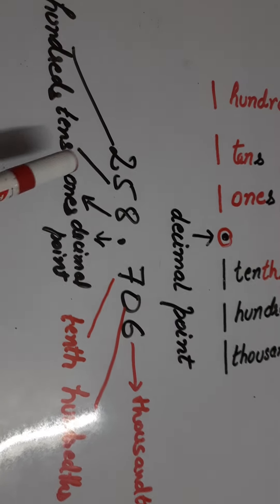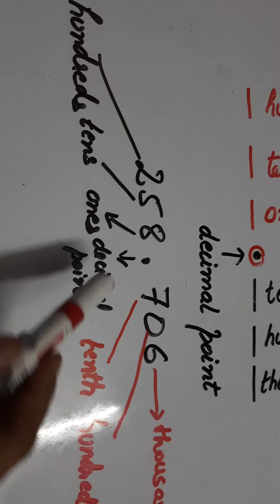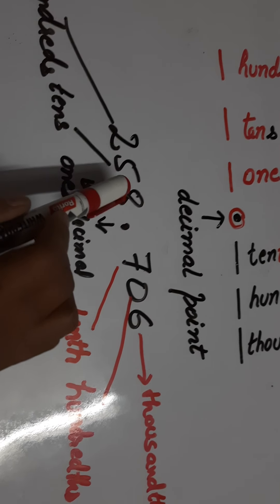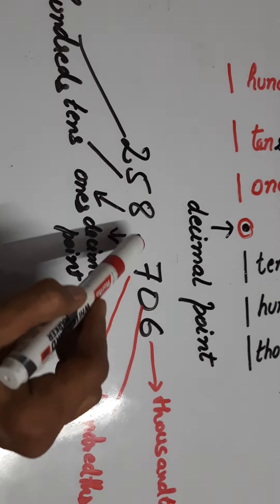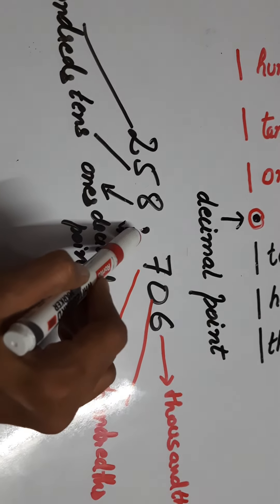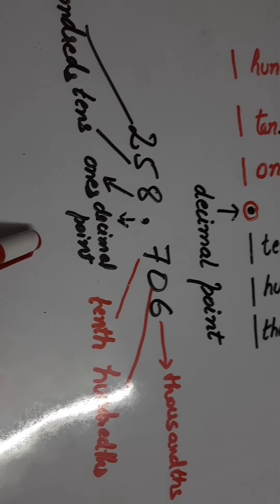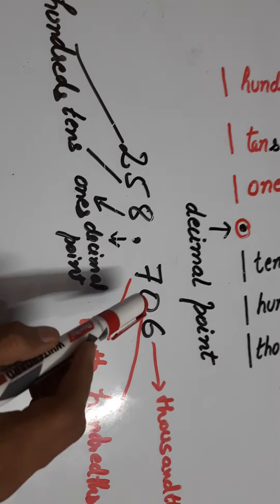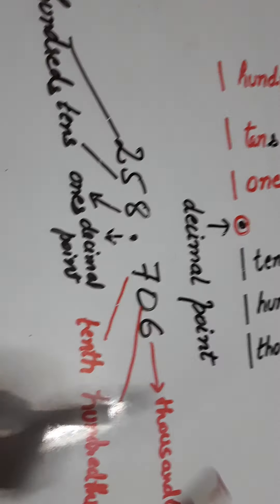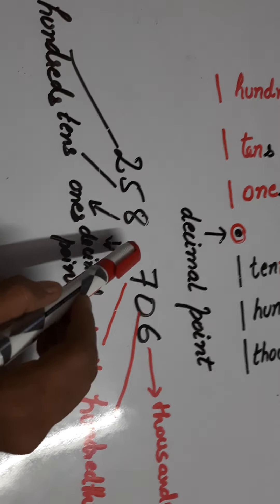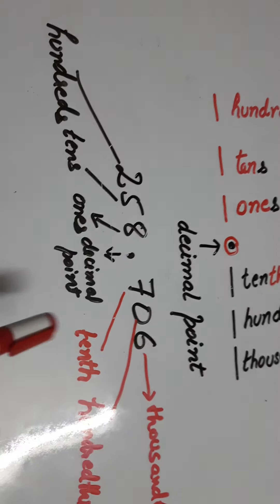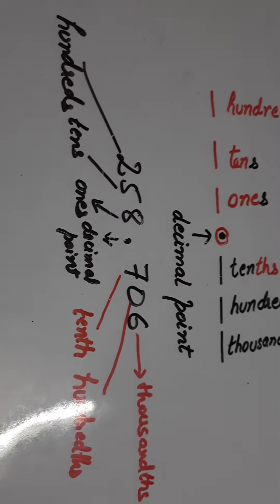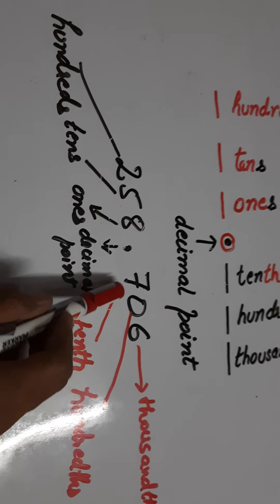If we want to pronounce this number, we'll read it as: two hundred fifty-eight point seven zero six. Remember — the left hand side is read as a whole number, but the right hand side digits are read as individual digits. So it is 'two hundred fifty-eight point seven zero six.' If you pronounce it as 'two hundred fifty-eight point seven hundred six,' that will be wrong pronunciation. After the decimal we read it as individual digits: seven zero six.